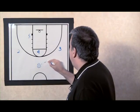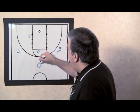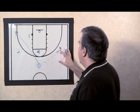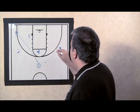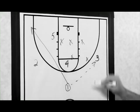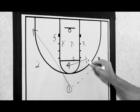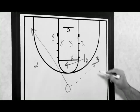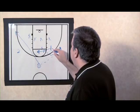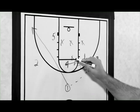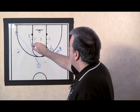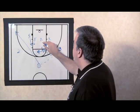The action is going to start with 1 passing to 3, and on that pass 1 will fill the opposite corner. As soon as 3 has the ball and the zone has shifted — let's say it's a 2-3 zone and maybe the guards come out — 4 is going to come over and immediately screen the top defender in the zone. 3 is going to come off this ball screen looking to either split the gap and get into the lane or attack the top defender in the zone. As that occurs, 5 is going to flash up to the mid post area in order to occupy the defenders.